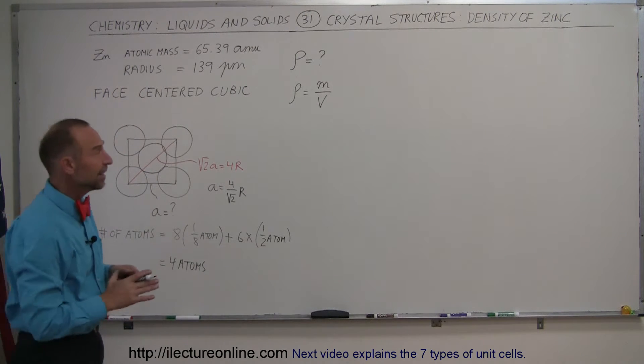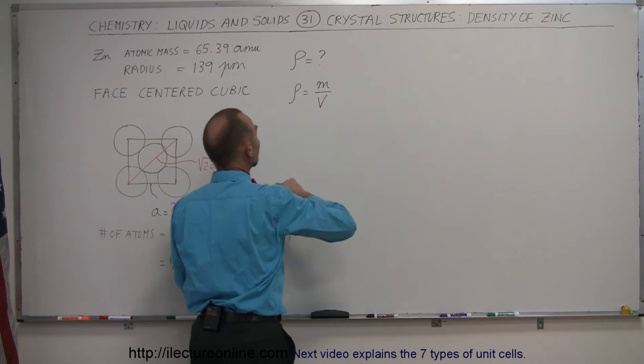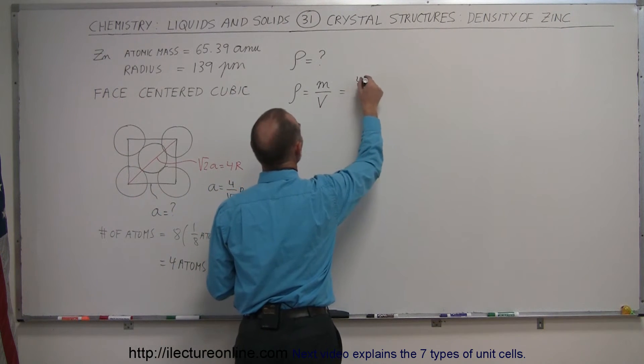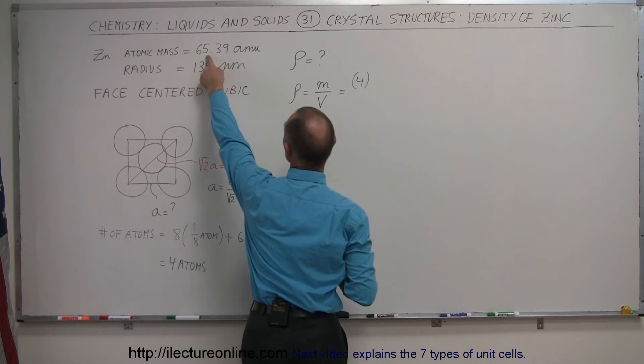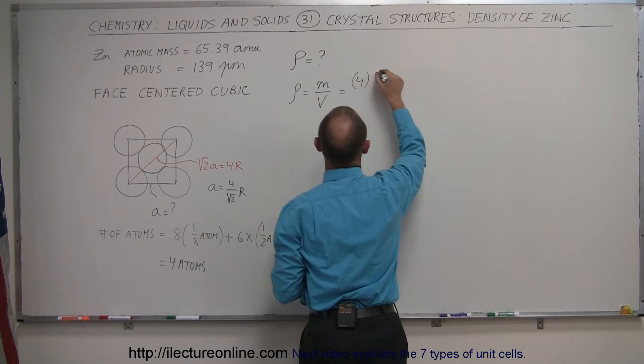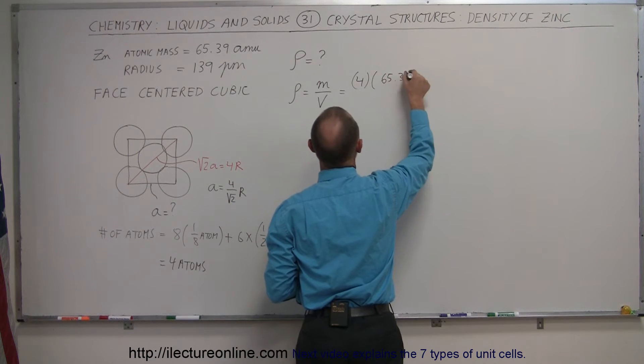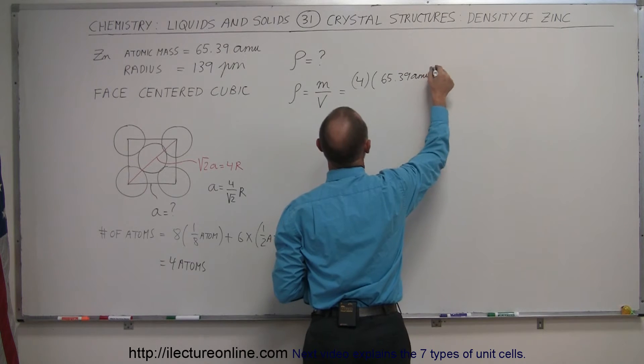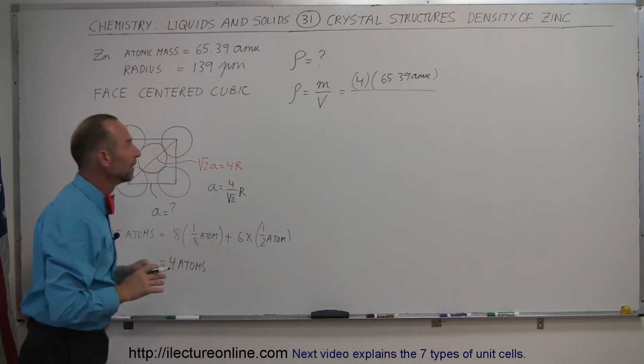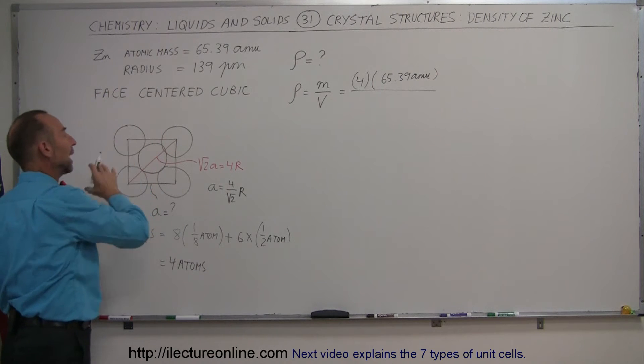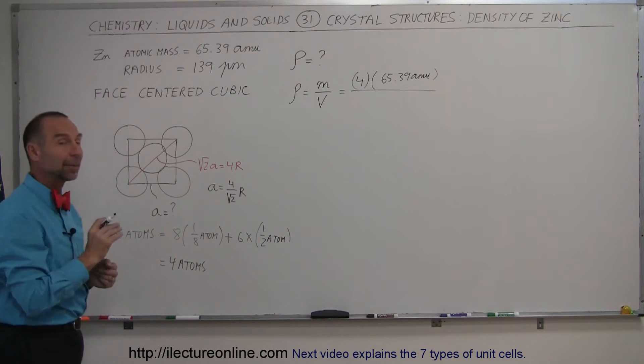Since density can be defined as mass divided by volume, this would then be equal to four times, because there's four atoms, times the mass of each atom, which is 65.39 AMU. So it would be four times 65.39 AMUs, and that would be the mass contained within one unit cell due to the four atoms being contained within it in that particular packing.